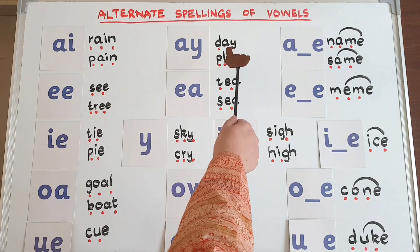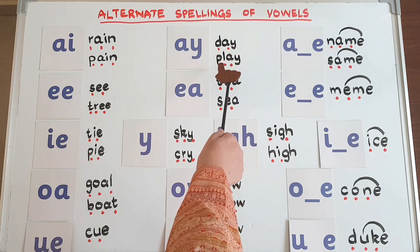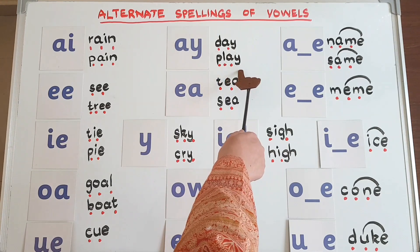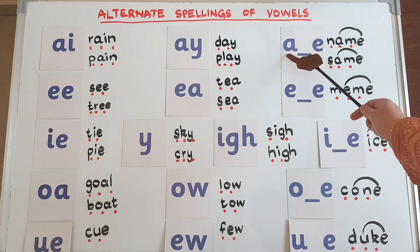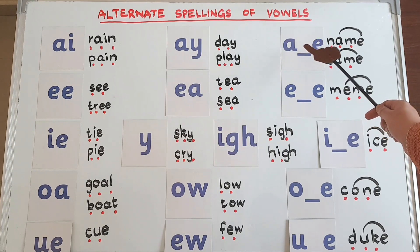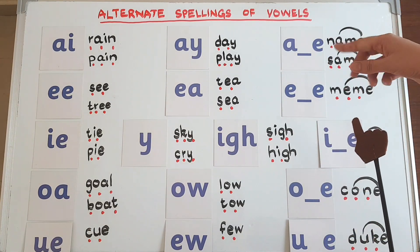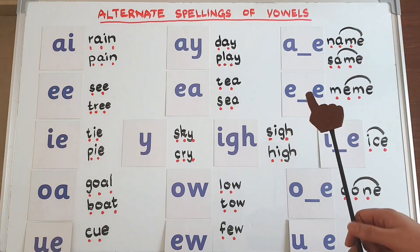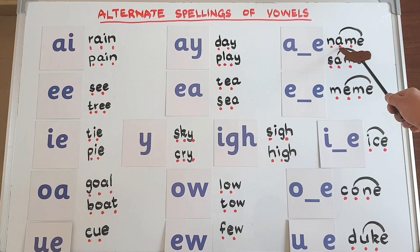Let's read two examples: 'd-ay' — day; 'p-l-ay' — play. This is also 'a': whenever you find a vowel 'a', a consonant, and an 'e' at the end, this 'e' casts its magic on 'a' and makes it say its name — that is 'a'. Like in 'name' — you can see this consonant comes here: 's-a-m-e' — same.